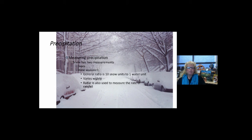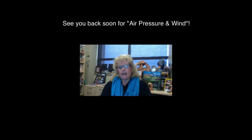Another way we measure precipitation is frozen precipitation, completely different than measuring rain. The general ratio of frozen snow is 10 snow units to one water unit. This can vary widely based on the density and compaction of the snow. Radar is the most dependable source about how much snow is going to fall, but if you get 10 inches of snow, when it melts it equates to one inch of water. I'm going to see you back soon for air pressure and wind. Looking forward to seeing you at the next lecture.